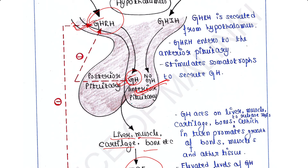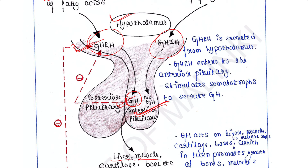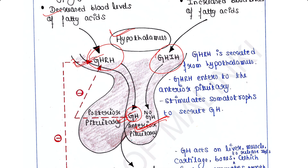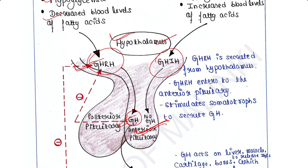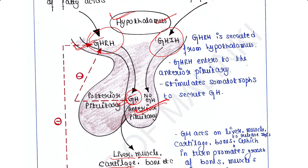GHIH is secreted from the hypothalamus in response to high blood glucose and increased blood levels of fatty acids. After being secreted, GHIH enters the anterior pituitary via the hypophysial portal system, where it prevents the somatotropes from secreting growth hormone.